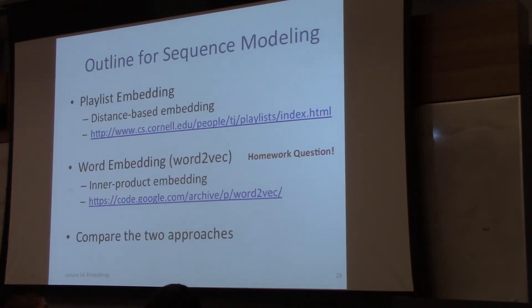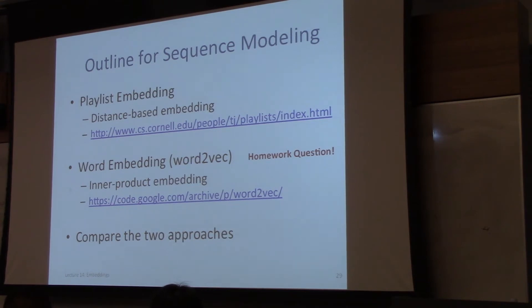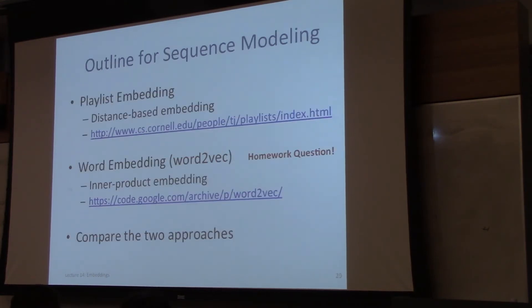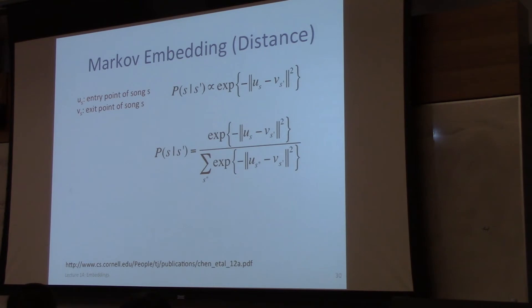I don't want to spend too much time on hidden Markov models — that's not the point of the lecture. We're going to look at sequence modeling using embeddings, and we'll look at two examples: playlists and word embedding. The word embedding problem is a homework question. In particular, the word embedding approach we're looking at is a simplified version of the word2vec approach that Google released, and it's very useful.